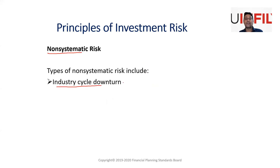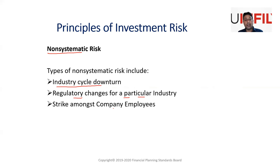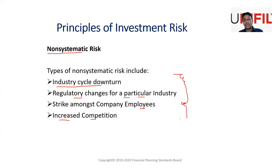Now let's look at unsystematic or non-systematic risk. One type is industry cycle downturn — sometimes pharma doesn't work, sometimes other sectors don't work, there can be a slowdown in a particular industry. Regulatory changes negative for a particular industry can also cause it to suffer. Strikes among company employees in a specific company can trouble that company and impact its sales and profits. Increased competition can also lead to lower sales for a specific company.